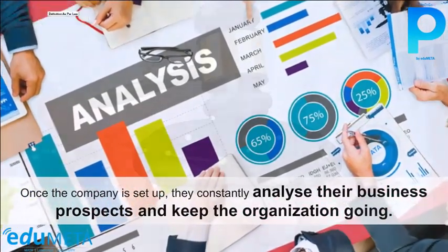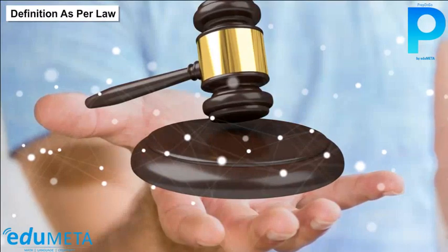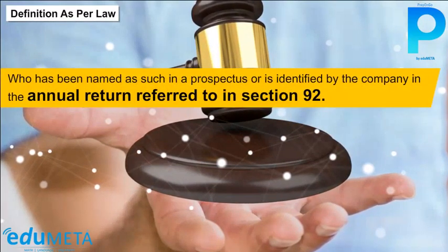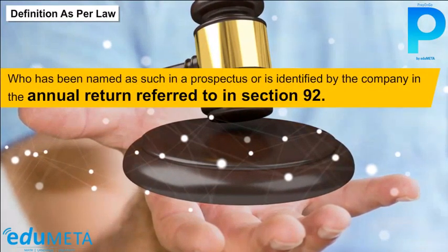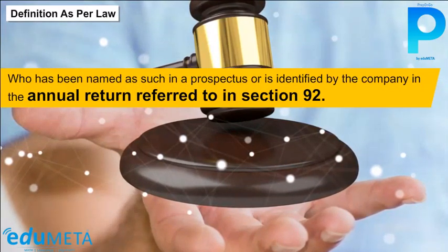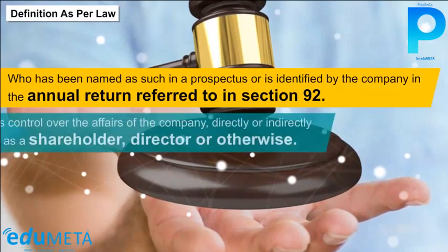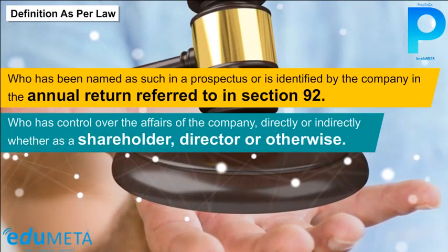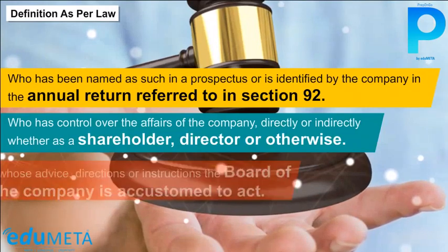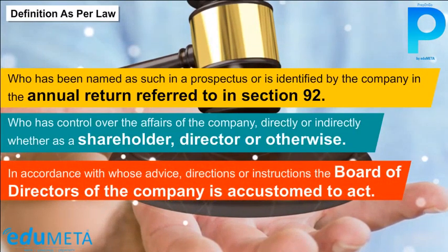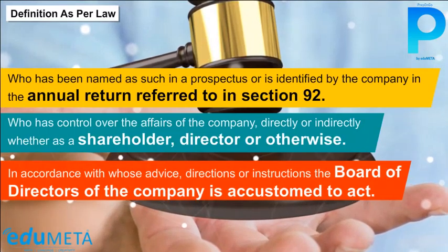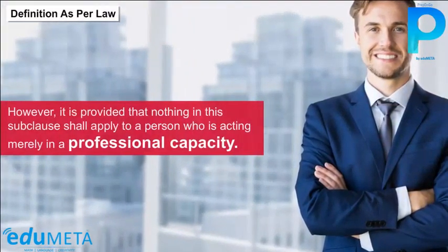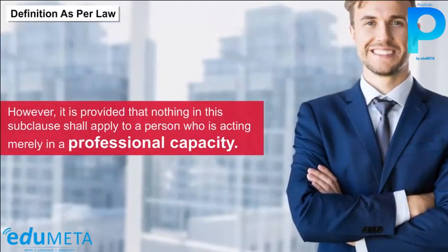Once the company is set up, promoters constantly analyze business prospects and keep the organization growing. Under Section 269 of the Companies Act 2013, a promoter is: A. one who has been named as such in a prospectus or identified by the company in the annual return referred to in Section 92; or B. one who has control over the affairs of the company directly or indirectly, whether as a shareholder, director, or otherwise; or C. one in accordance with whose advice, directions, or instructions the board of directors is accustomed to act. However, this does not apply to a person acting merely in a professional capacity.